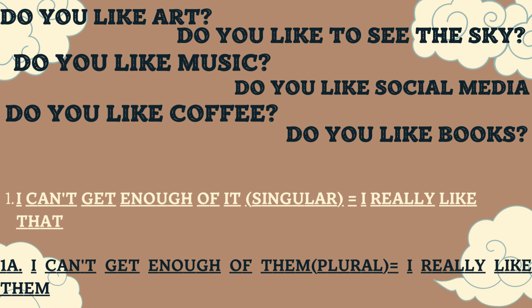For example: 'Do you like reading books?' — 'Yes, I can't get enough of them.' 'Do you like watching movies?' — 'Yes, I can't get enough of them. I like the action and thriller kinds of movies.' You can mention the genre of movies in this case. If the subject is plural, use 'them'; if it is singular, use 'it.' This means you really like those things.